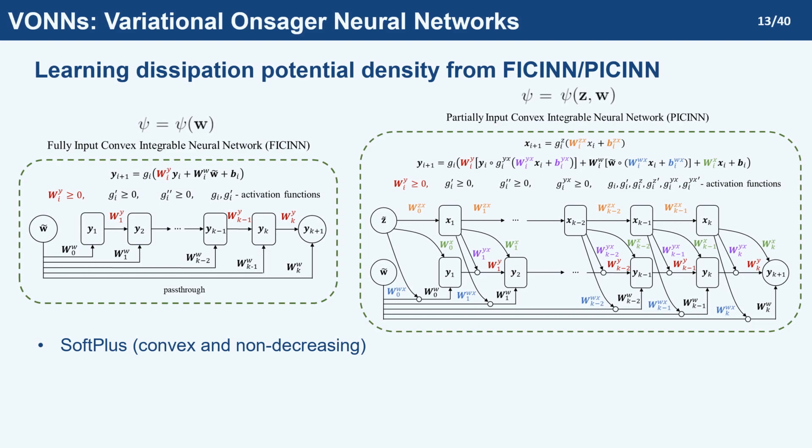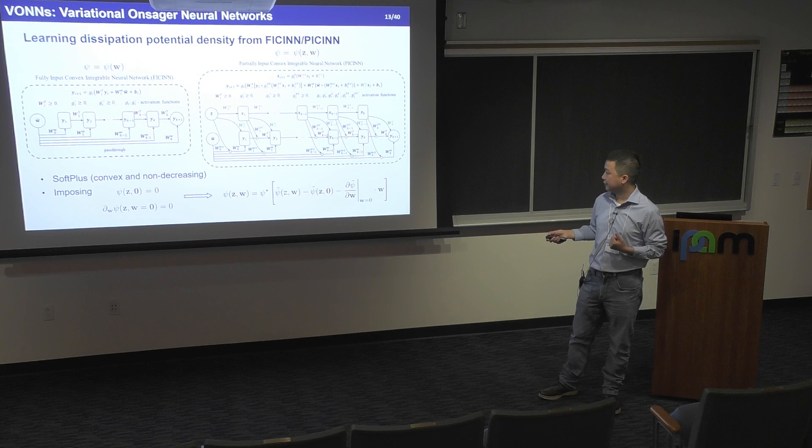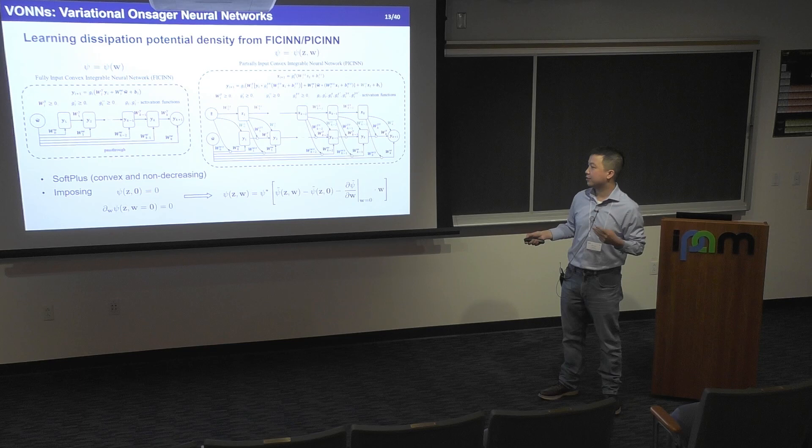To impose the remaining two constraints from the second law, we apply a similar trick: let psi-hat be the direct output from the neural network, subtract the zero point and the zero point of the derivative, so that the resulting psi satisfies all three thermodynamic constraints from the second law.